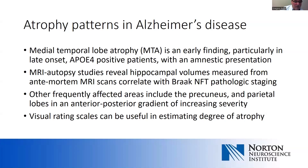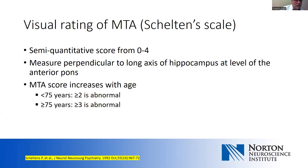It's helpful to familiarize yourself with some visual rating scales, particularly if you haven't looked at a lot of MRI scans. Looking at the pictures yourself gives you a sense of how much atrophy there is, because radiology reports are often more descriptive than quantitative. The most commonly used visual rating scale for medial temporal lobe atrophy is the so-called Scheltens scale — a semi-quantitative score from zero to four, measured perpendicular to the long axis of the hippocampus at the level of the anterior pons.